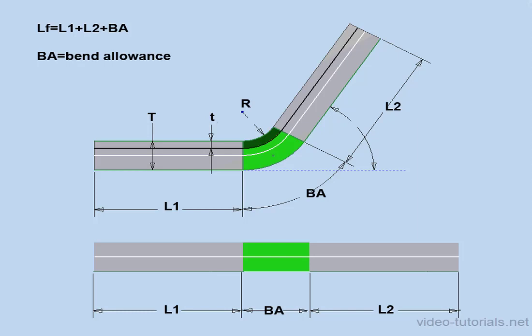For example, if you compare the length of this part up here before the bending and after the bending, you're going to find that they're different. As engineers, if we don't compensate for this difference, the final product or part won't have accurate dimensions. And of course, this becomes more and more critical for parts where tighter tolerances are required, or where parts require a very high level of precision.